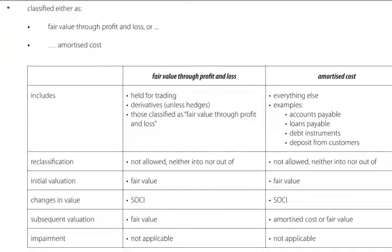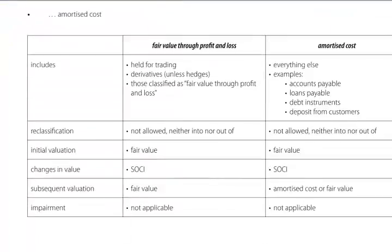Financial liabilities fall under two categories: fair value through profit and loss, and held at amortised cost. Again, it should be straightforward. Initial valuation is fair value. Changes in value go through comprehensive income. Impairment is not applicable, so this should be relatively straightforward to learn. Reclassification is not allowed, neither into nor out of.